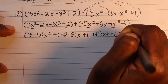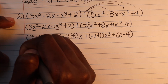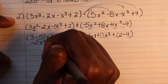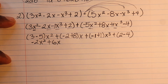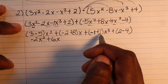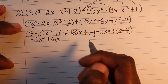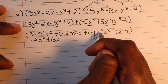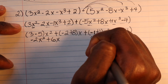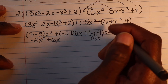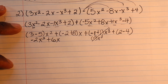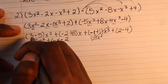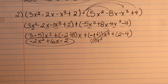Last but not least we have 2 and negative 4, so 2 minus 4. Now solving: 3 minus 5 gives negative 2x², negative 2 plus 8 gives 6x, and negative 1 plus 1 gives 0 times x³ — so that term disappears entirely. And 2 minus 4 gives negative 2. So that is your final answer.